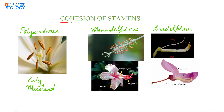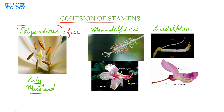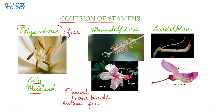Cohesion of stamens means attachment of stamens with each other. Polyandrous means the stamens are free; free stamens are referred to as polyandrous — example: lily and mustard. In the monadelphous condition, the filaments unite to form one bundle while the anthers are free. This staminal tube with free anthers is the characteristic of family Malvaceae, the hibiscus family.